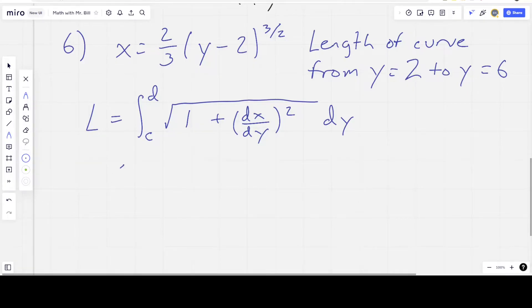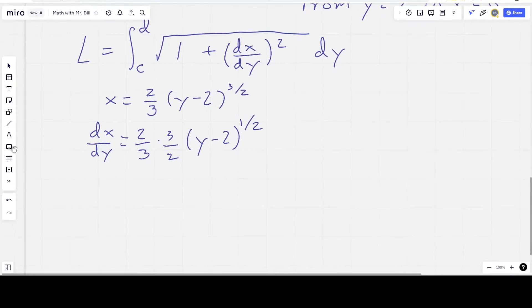So if x is equal to 2/3 times (y - 2) to the 3/2, then dx/dy is equal to 2/3 times 3/2, and then (y - 2) raised to the 1/2. And then the derivative of the inside is just 1, so we're good there. So clean that up just a little bit.